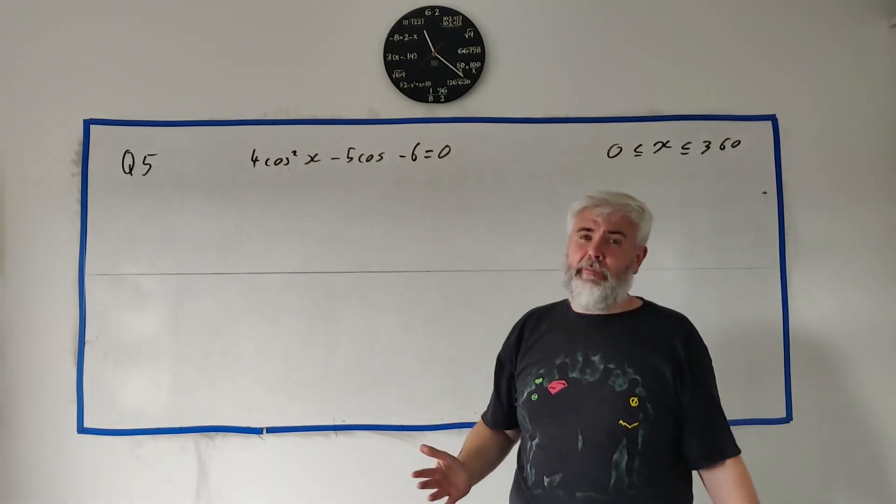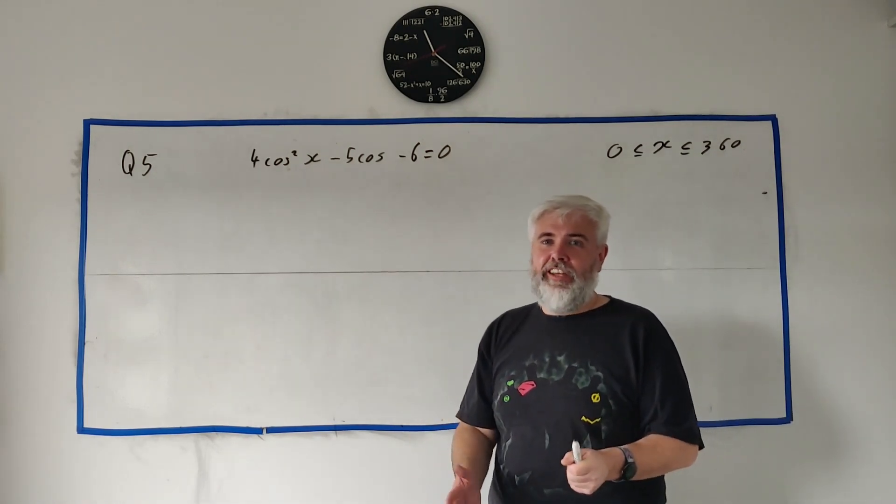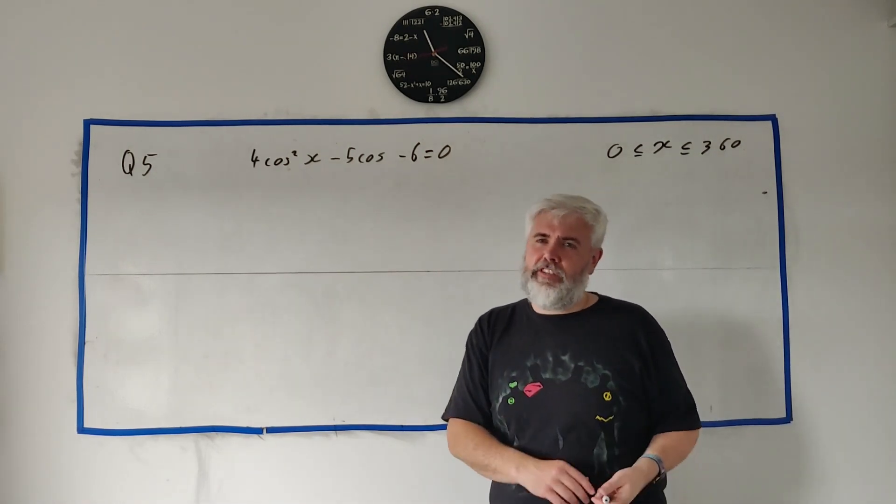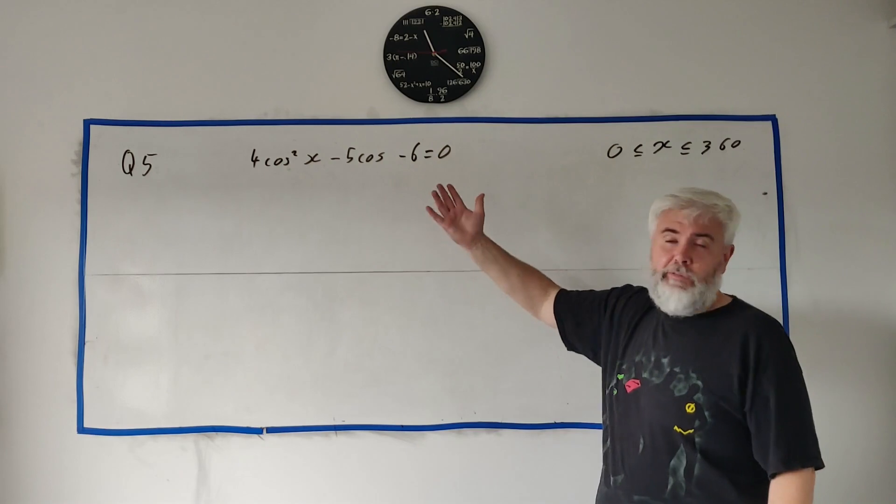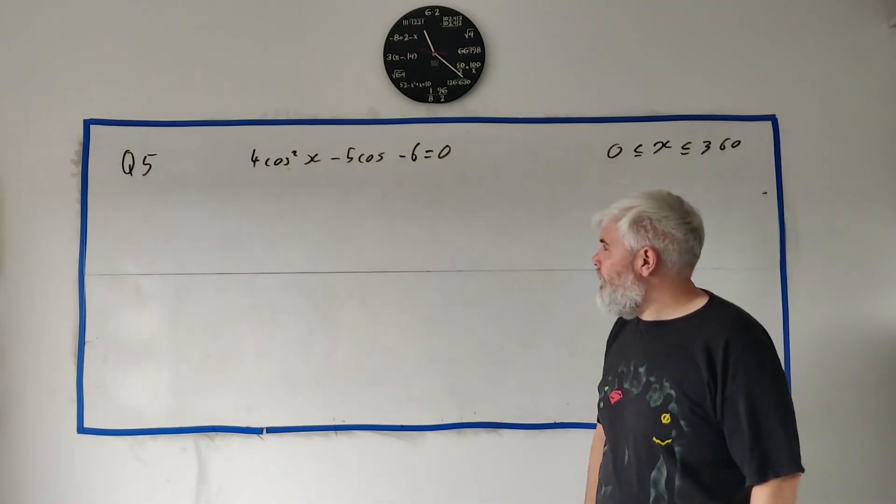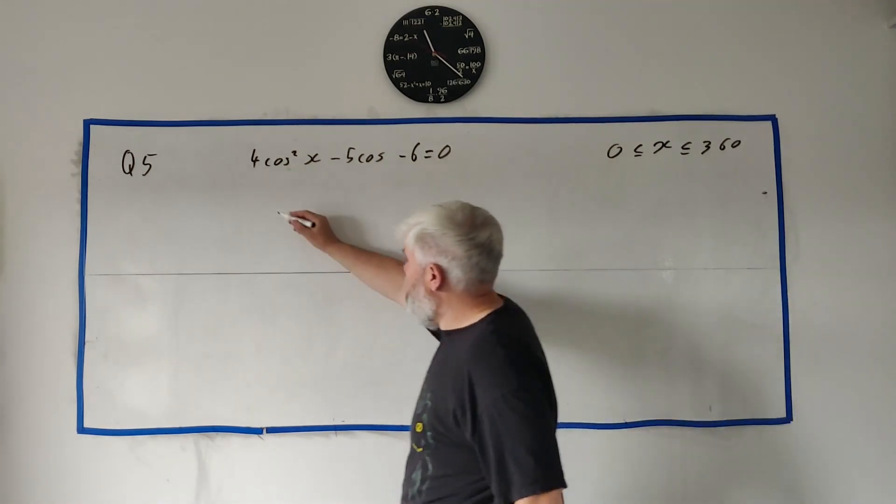And that's fairly common in maths. They ask you to change how something looks. And then they say solve that first thing. So you have to think, well, let me use the new thing. It's going to be easier. And it will be because this is a quadratic. We can solve this quadratic.